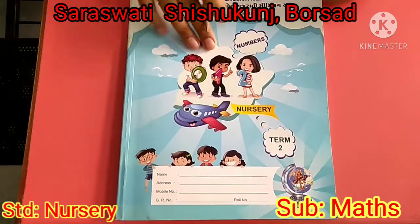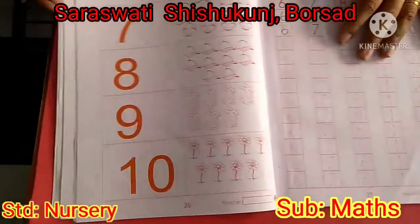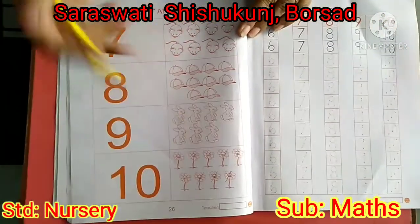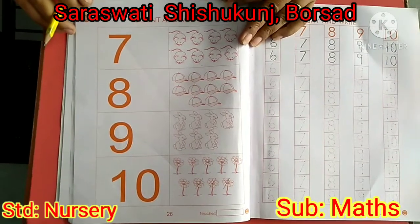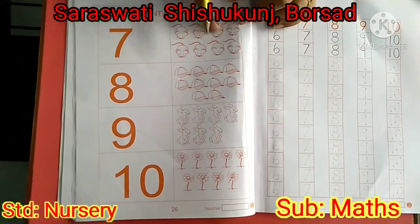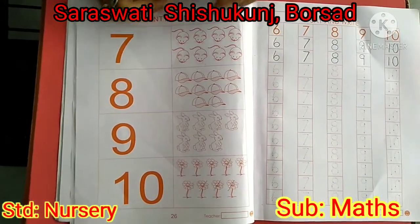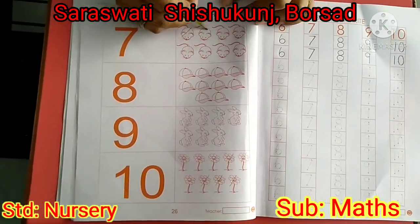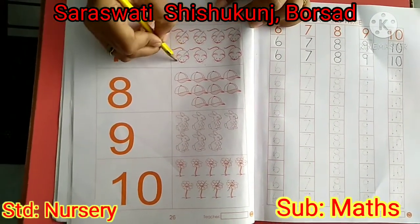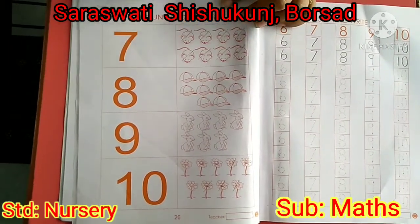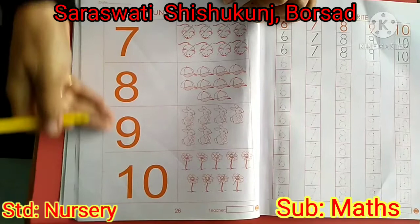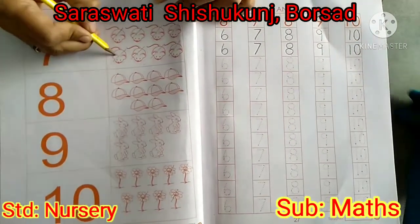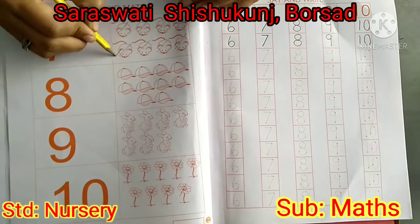Look at here. This is our math notebook, Term 2. So open page number 26, count and match. Here some numbers and pictures are given, so we have to count one by one. What are these? Yes, reds. So count with me, how many? 1, 2, 3, 4, 5, 6, 7, 8. Where is number 8? Is this number 8? Yes. So match the reds with number 8.